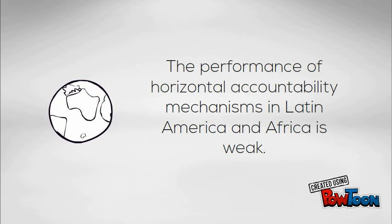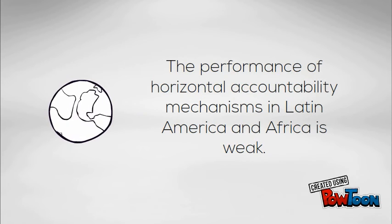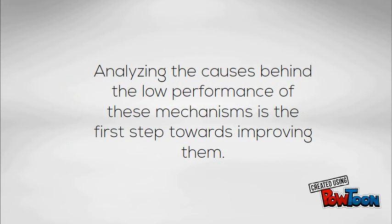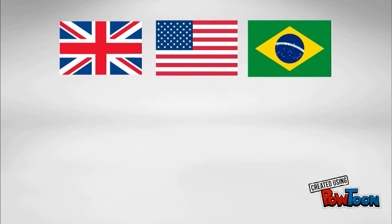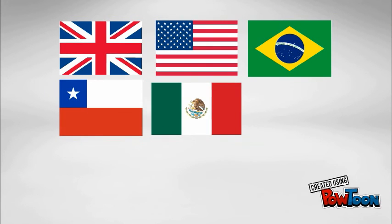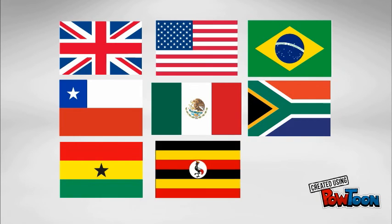There is consensus that the performance of horizontal accountability mechanisms in Latin America and Africa is weak. Knowing the reasons behind this performance is key to designing better accountability mechanisms. As you will see in more depth in the summary note, many countries in the world share similar accountability mechanisms. However, this doesn't mean that they all perform in the same way.